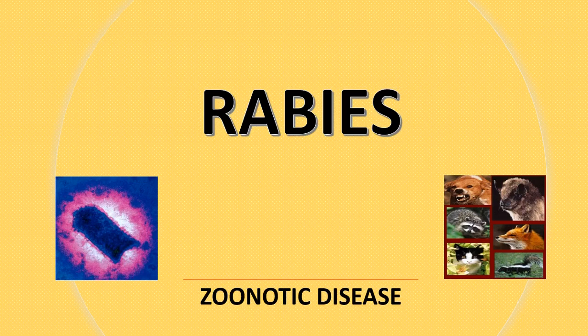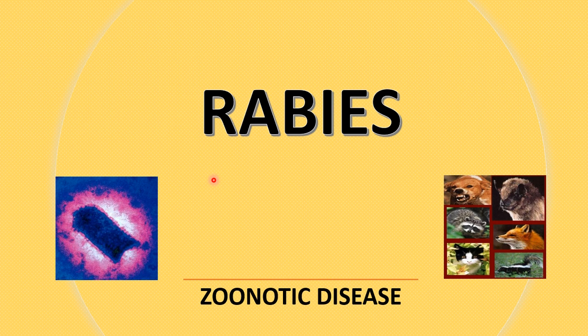We are going to discuss a disease called rabies, which is one of the zoonotic diseases. Rabies has been recognized from very ancient times as a disease that occurs primarily in animals and is transmitted to humans. Here are some of the mammals affected by rabies, along with a photograph and an electron microscopic figure of the rabies virus.